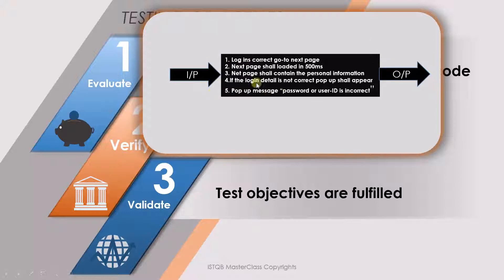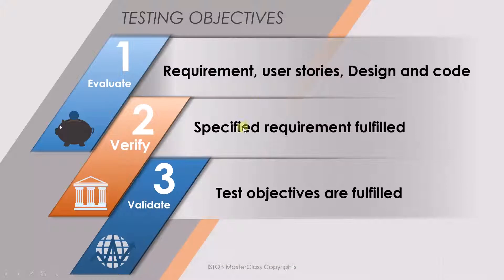A second test case is also required, where we input the incorrect user ID or password, and then we have to validate that the pop-up contains the particular message. This is why this stage is called validating — because the code is running, it is dynamic. So the first objective is to evaluate requirements, the second is to verify if specified requirements are fulfilled, and the third is to validate if the objectives have been met.